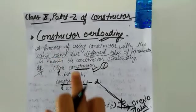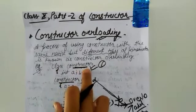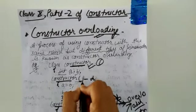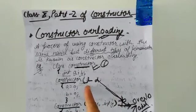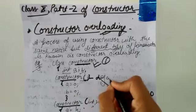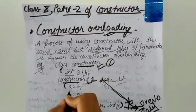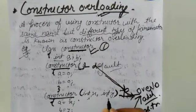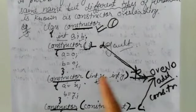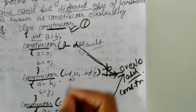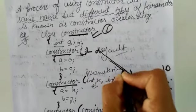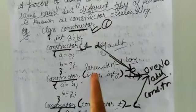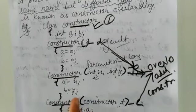Now I am giving an example. Class name is 'Constructor'. I have taken two integer variables, a and b. This is a default constructor — it is blank, and we are initializing it to 0, 0 because it takes default values. The second one is a constructor with int x and int y — we are passing parameters int x and int y. These are known as a parametrized constructor. So in a single class I have taken two: default and parametrized, with a equals x and b equals y.